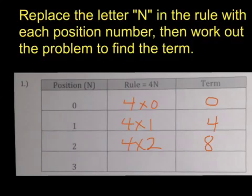Third position. I'm going to put 4 times 3. 4 times 3 is 12. So now I know that my answers are going to be 0, 4, 8, and 12. Table number 1 done.